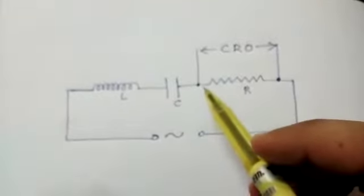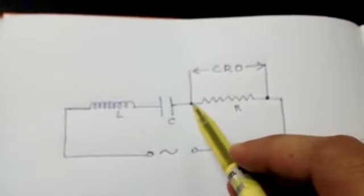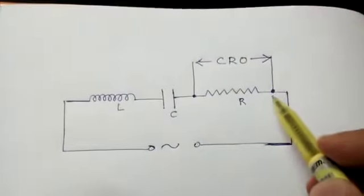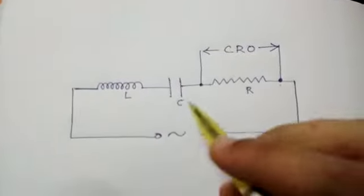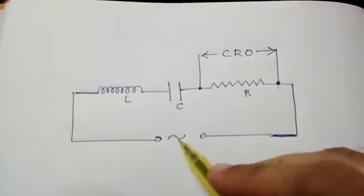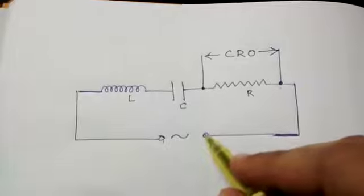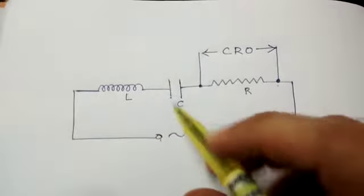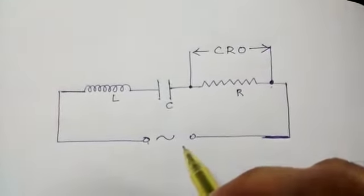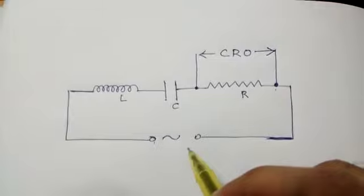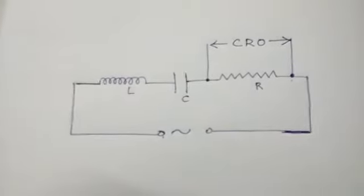We can measure the voltage across the resistance by connecting these two points in the circuit to a CRO. By connecting a signal generator across these two points, you can apply a variable AC voltage — meaning an AC voltage whose amplitude and frequency can be varied.